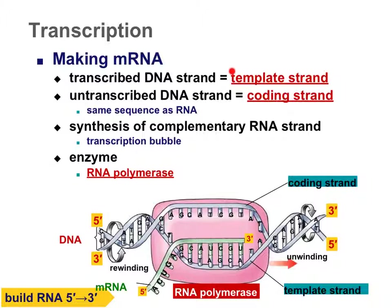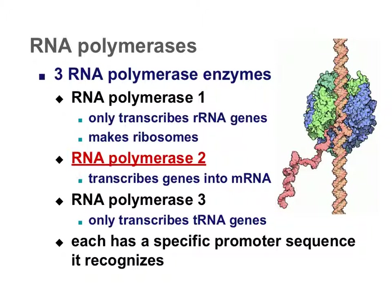The transcribed DNA strand is called the template strand, just like in replication. The untranscribed strand has the same sequence of bases as the RNA — with one base substitution — and is called the coding strand. The enzyme here is RNA polymerase, which catalyzes the building of the mRNA sequence. For this course, we'll focus on RNA polymerase type 2, the one responsible for transcribing genes into mRNA.